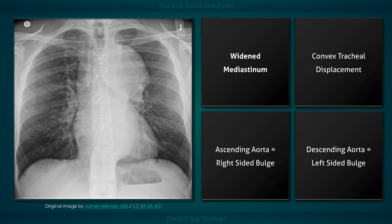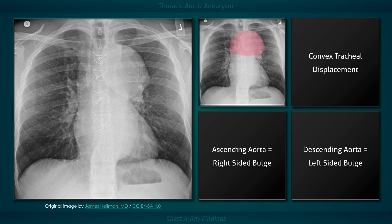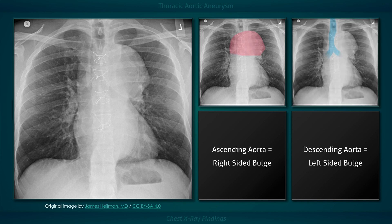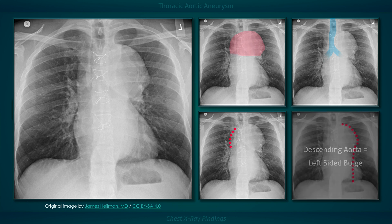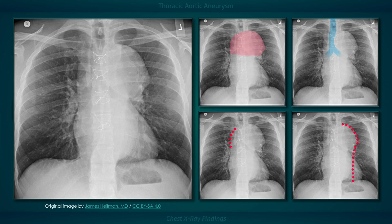For a quick review: the most common chest x-ray finding in a patient with a thoracic aortic aneurysm is mediastinal widening. Calcification of the outer wall can occur but is relatively uncommon. Large aneurysms can cause lateral displacement of the trachea and inferior displacement of the left main bronchus. Aneurysms limited to the ascending aorta typically cause a right-sided bulge, and when large, form the upper right border of the heart. Aneurysms limited to the descending aorta typically cause a left-sided bulge.